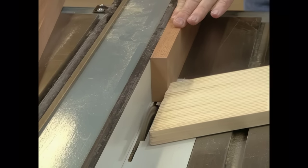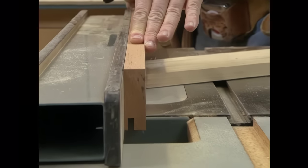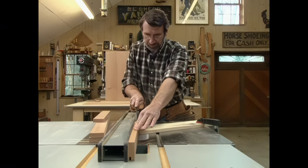The setup is a quarter inch dado, a half inch high and a feather board to keep the stock tight against the fence as I run it through. All four frame pieces need a groove.